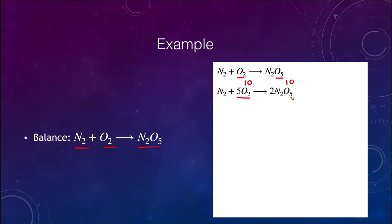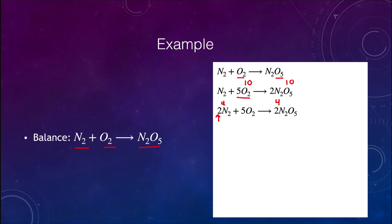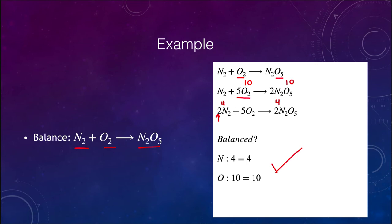Now nitrogen is unbalanced — we have two on the left and four on the right. We can balance that by putting a coefficient of two in front of N2, giving us four nitrogen atoms on each side. Changing that did not change our oxygen balance. Let's check: nitrogen has four on each side, oxygen has ten atoms on each side — yes, this is a balanced equation. And there are no common factors of two and five, so yes, these are the lowest whole number coefficients.